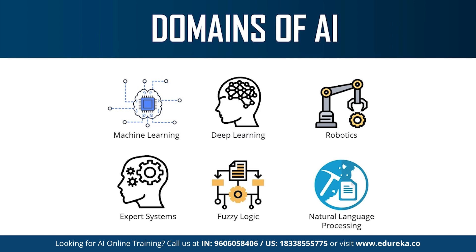Next we have deep learning or neural networks. Deep learning is the process of implementing neural networks on high-dimensional data to gain insights and form solutions. It is the logic behind the face verification algorithm on Facebook, the logic behind self-driving cars, and virtual assistants like Siri and Alexa. Then we have natural language processing, which refers to the science of drawing insights from natural human language to communicate with machines and grow businesses. Twitter uses NLP to filter out terroristic language in tweets, and Amazon uses NLP to understand customer reviews and improve user experience.